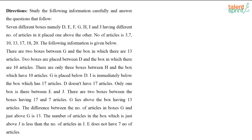Study the following information carefully and answer the questions that follow. Seven different boxes — D, E, F, G, H, I, and J — are placed one above the other, each having a different number of articles: 3, 7, 10, 13, 17, 18, and 20. We have to place these boxes one on top of the other, and each box has a different number of articles in it.